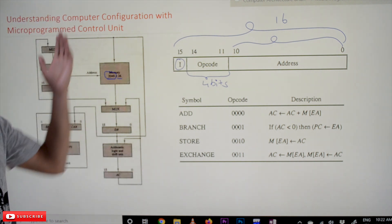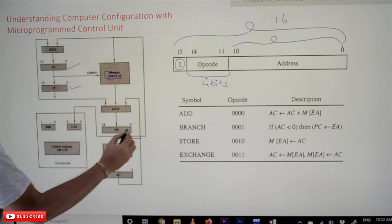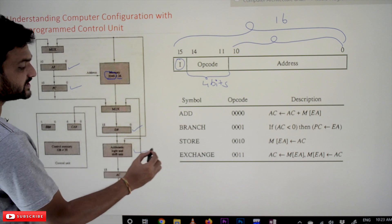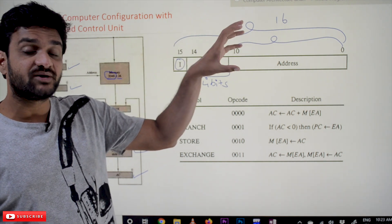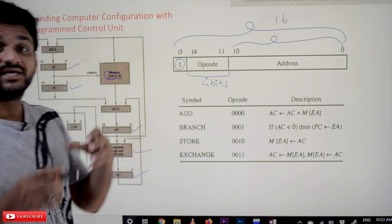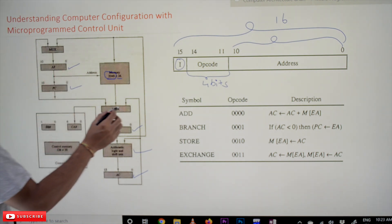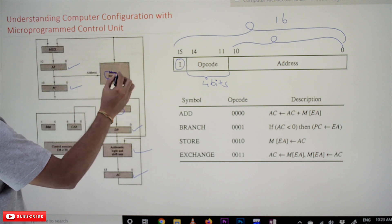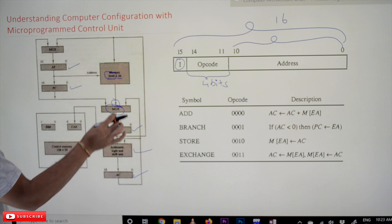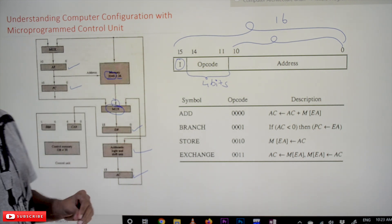Each location is of size 16 bits, and this one bit is for the indirect address mode, same as our previous instruction format. This computer consists of 4 registers: one is the Address Register, one is the Program Counter (PC), next is the Data Register, and next is the Accumulator. Apart from that it also has an Arithmetic and Logic Unit. In the basic computer, data transfer between registers, ALU, and memory is done using a common control bus, but here the data transfer is done using a multiplexer.